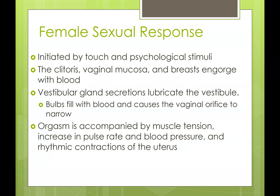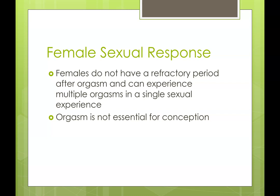As for the female sexual response, it is stimulated by touch and psychological stimuli. The clitoris, vaginal mucosa, and breasts engorge with blood. The Bartholin glands secrete lubrication into the vestibule of the vagina. The bulbs fill with blood causing the vaginal orifice to narrow, and orgasm is accompanied by muscle tension, increased pulse rate and blood pressure, and rhythmic contractions of the uterus. A female does not need to have an orgasm to fertilize an egg, and unlike males, females do not have a refractory period after orgasm, so they can experience multiple orgasms in a single sexual experience.